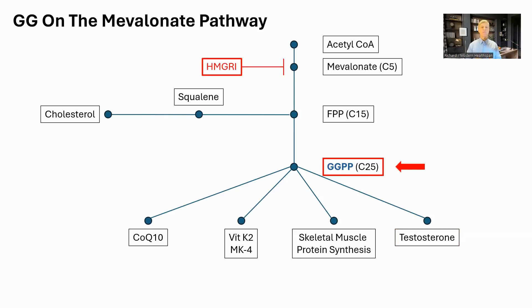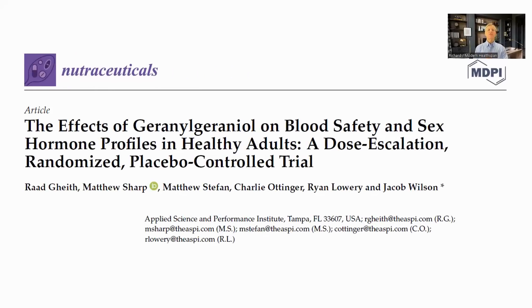GG goes down with age, so it may help to supplement with it. Another key factor is the use of statins. Statins are common drugs prescribed for high cholesterol, and are used by 90 million people in the US and maybe 200 million people worldwide. Statins work by inhibiting HMG-CoA reductase, the master regulator of the mevalonate pathway, which blocks the pathway. This works well as its primary function, as it stops the production of cholesterol. However, it also blocks the rest of the pathway, including the synthesis of GG and its downstream products — CoQ10, MK4 — and impacts GG's other functions in protein synthesis.